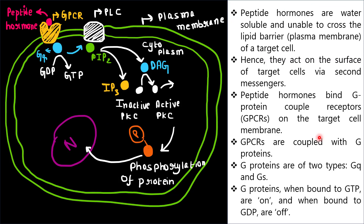Peptide hormones are water soluble and unable to cross the lipid barrier, that is the plasma membrane of a target cell. Hence they act on the surface of target cells via second messengers.